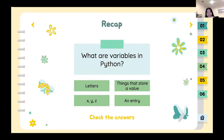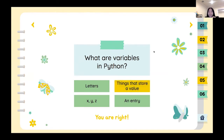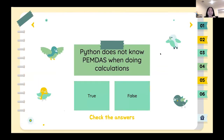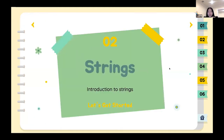Here's a quick review — not really a quiz, it's only two questions. Number one: what are variables in Python? That's right — things that store values. Good job. And number two: Python does not know PEMDAS when doing calculations. That is false — very enthusiastic yes — and that is correct as well. We are done with our little quiz. Let's move on.